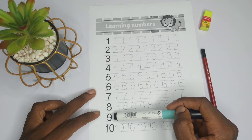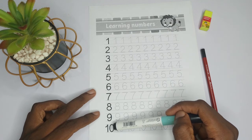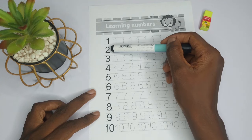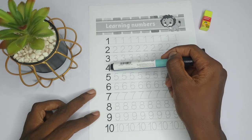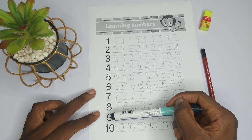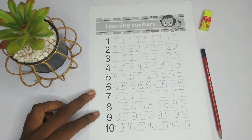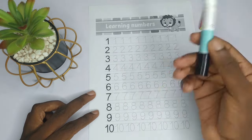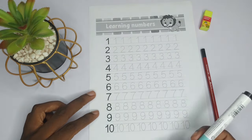And lastly, ten. So let's go over once again. We have one, two, three, four, five, six, seven, eight, nine, ten. Very good. Now let's trace the dotted lines over here for us to practice how to write them.